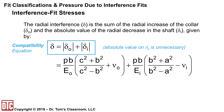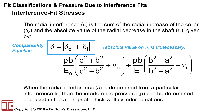The total radial interference delta equals delta O plus the absolute value of delta I. This is the sum of the two equations from the previous expressions for the worst case scenario with different materials for the hole and shaft. Once the radial interference is determined from a particular interference fit, we can calculate from this equation — through some arithmetic and algebra — the interface pressure P to be used in the appropriate thick wall cylinder equations.